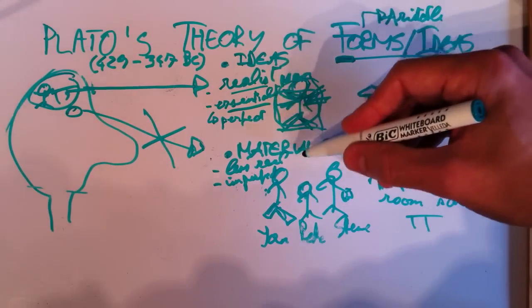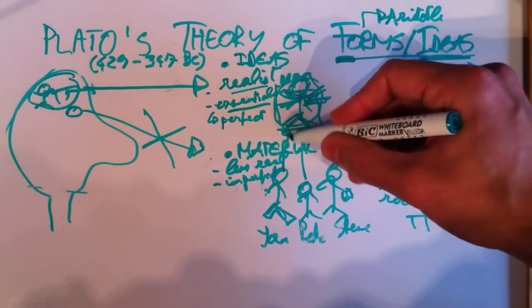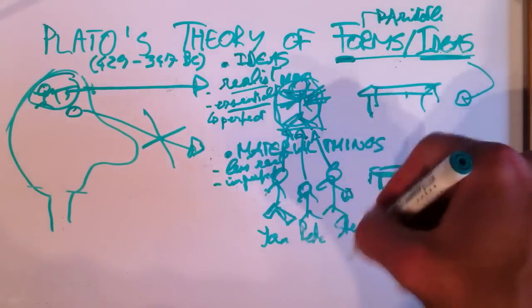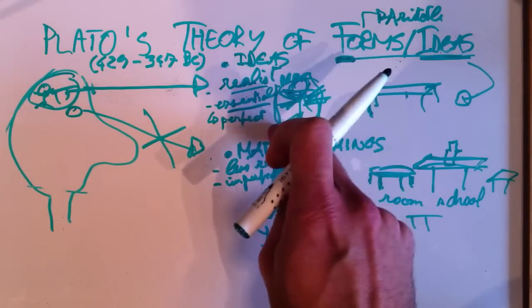And the idea is that that's somehow a copy. So, we think that, you know, the idea of man is somehow a copy of the people that we really see and meet in reality. But for Plato,